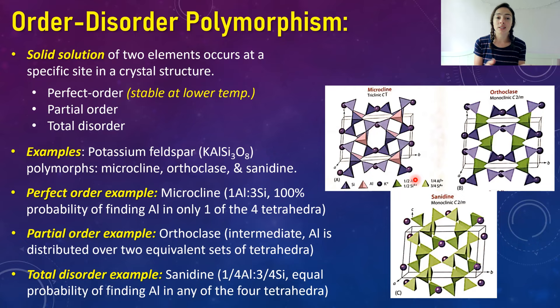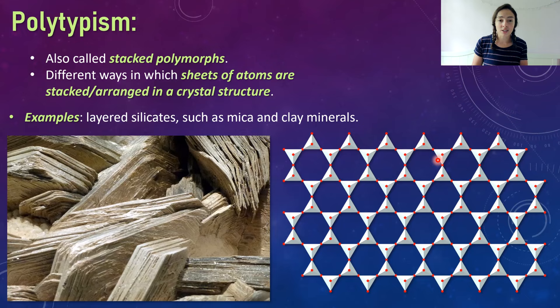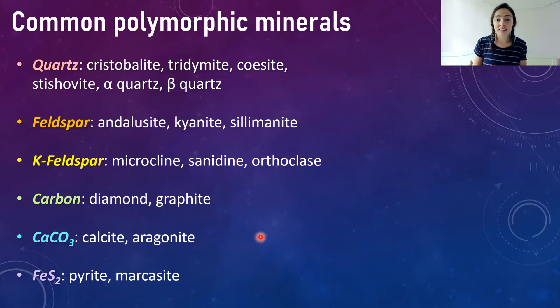Polytypism is really only applicable to sheet silicates — for example, layered silicates like mica and clay minerals. It basically means different ways in which sheets of atoms are stacked or arranged in a crystal structure. For this reason, these polytypes of mica or clay minerals are also called stacking polymorphs. Now let's move on to the examples, which should really bring it all together and is good to know for identifying common minerals that have polymorphs.